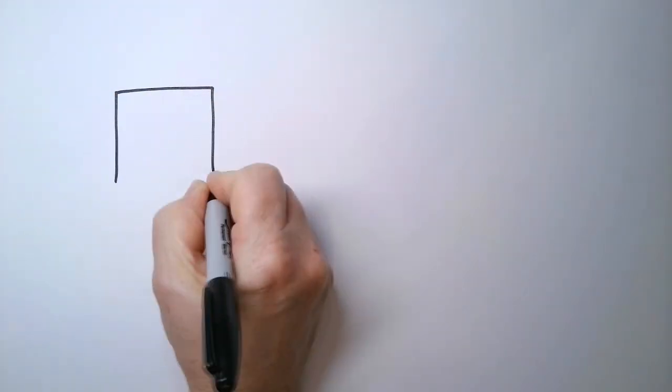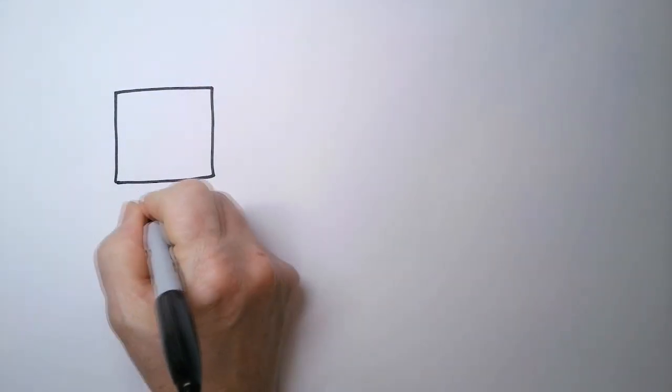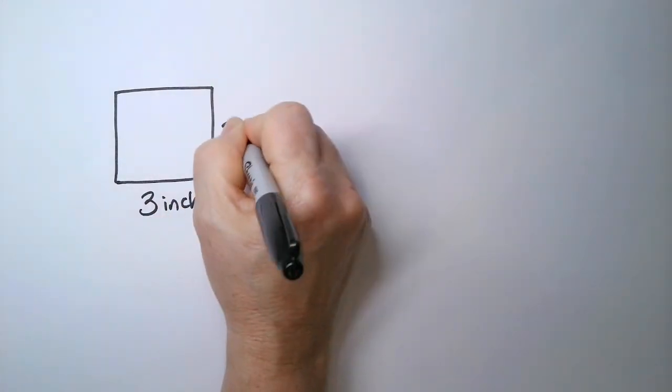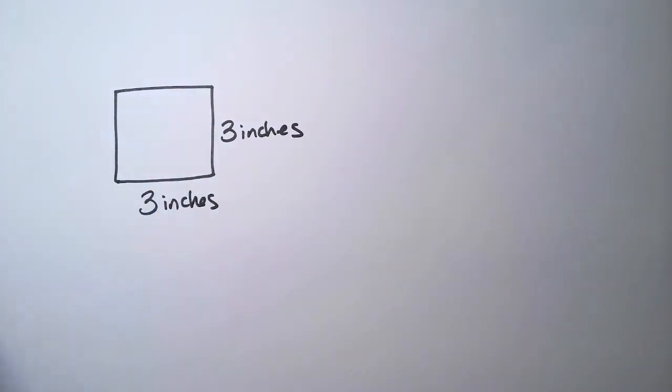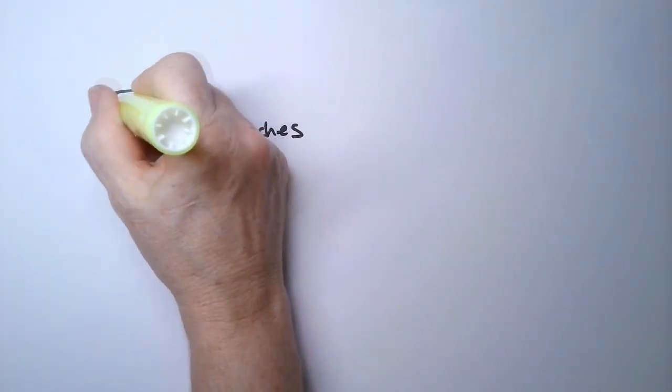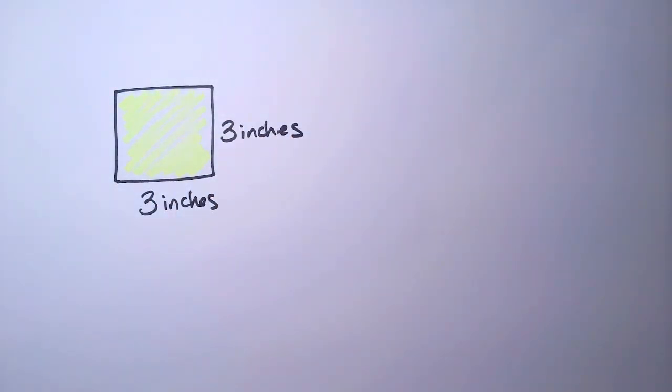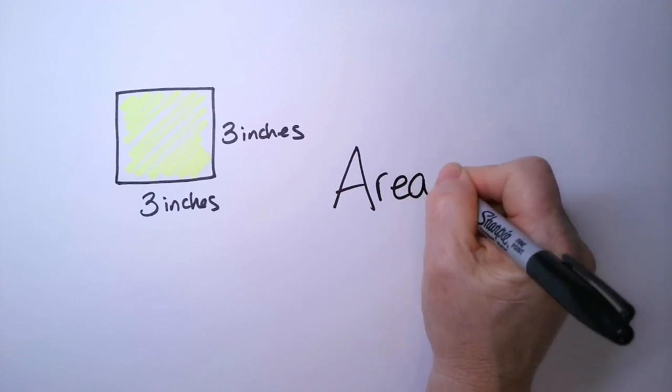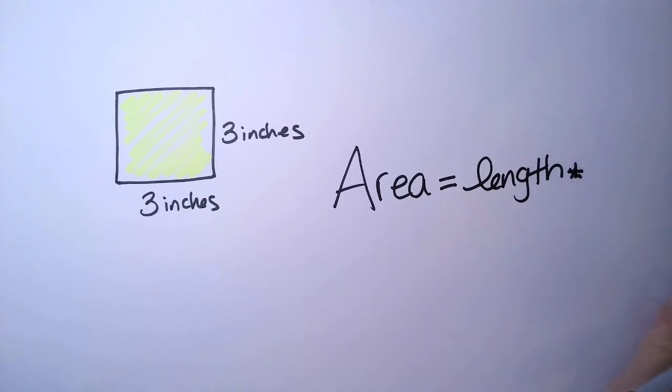So I have a square, and the neat thing about a square is it's a shape that has four sides that are all the same. So if I tell you this side is three inches, this side is also three inches. We call that congruent, same size, same shape. And if I want to know what is the area, it simply means how much space does it take up on the paper.